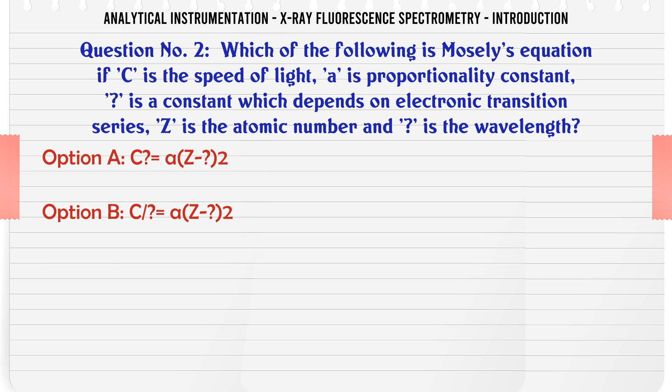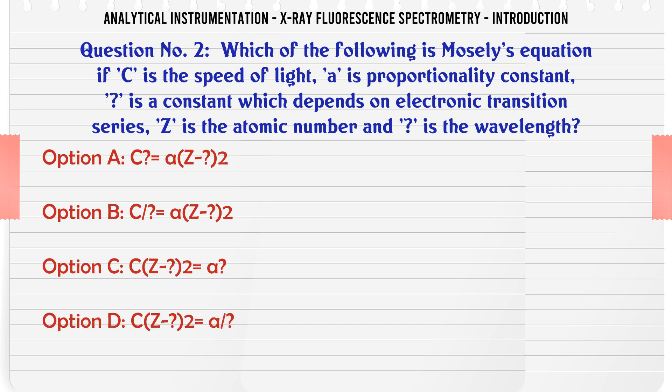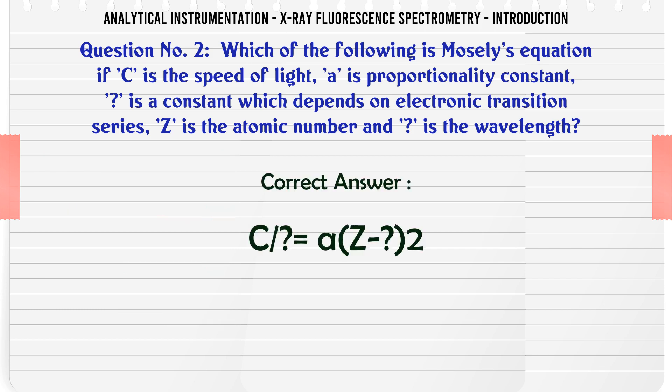Which of the following is Moseley's equation? If C is the speed of light, A is a proportionality constant, B is a constant which depends on electronic transition series, Z is the atomic number, and λ is the wavelength. The correct answer is: C = Az².